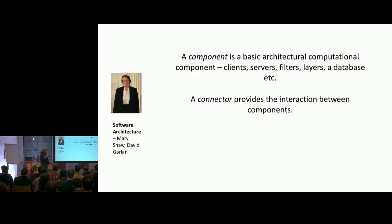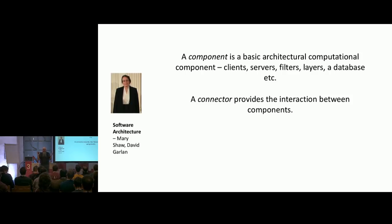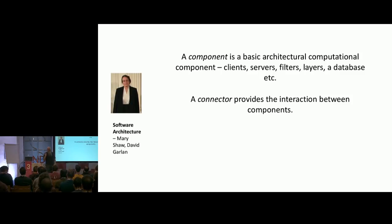A component is the box in a box-and-lines diagram — the unit of computation, where stuff actually happens. A connector is the line — a communication path between two units of computation. That's how most people instinctively draw and use it. People mock boxes-and-lines diagrams and say 'you're not doing UML,' but actually there is a formal boxes-and-lines notation given in Shaw and Garland's book: a box is where things are computed, a line is how things communicate, and you can apply constraints to them.